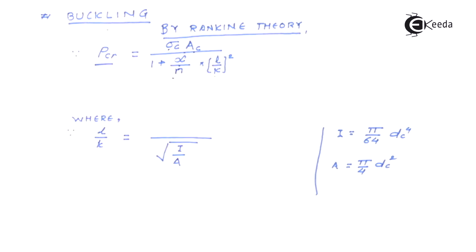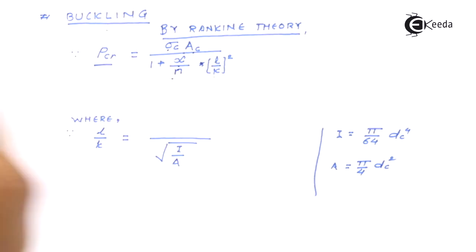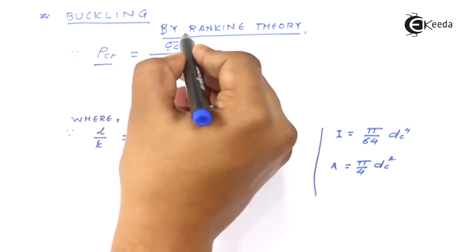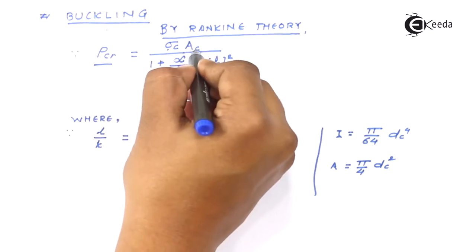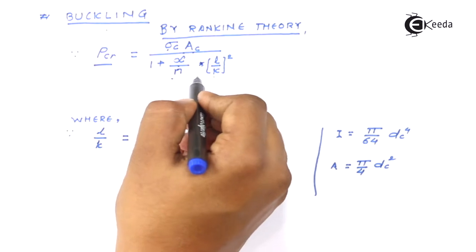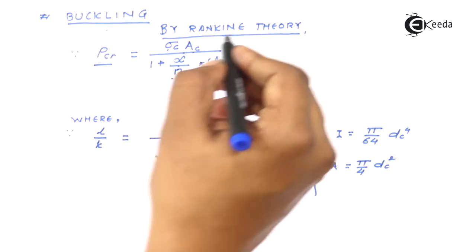Now there is another thing the standard values that we can select for all of them are as follow. We already know sigma c, we can find out area, the alpha and n values are predefined for the plain carbon steel.